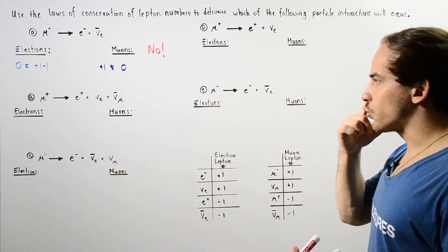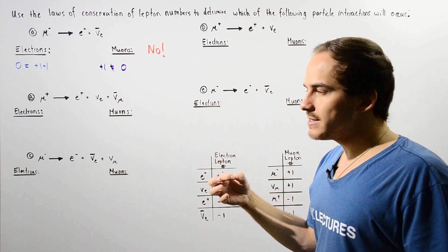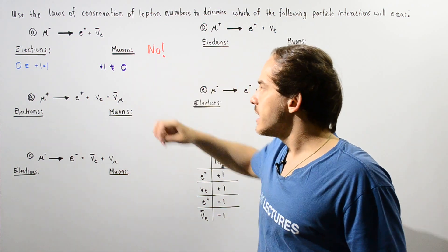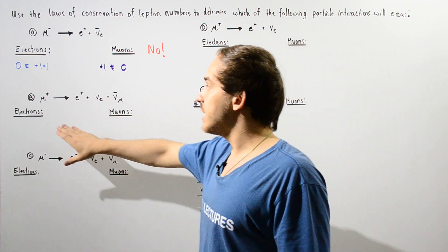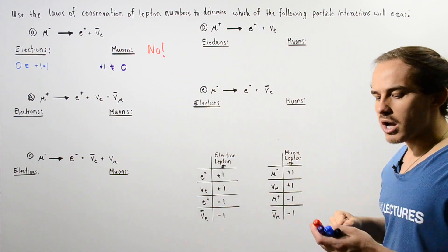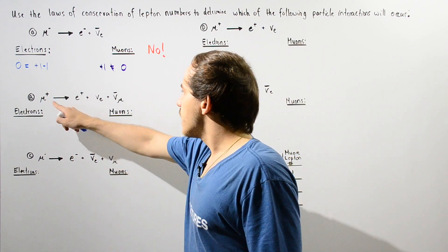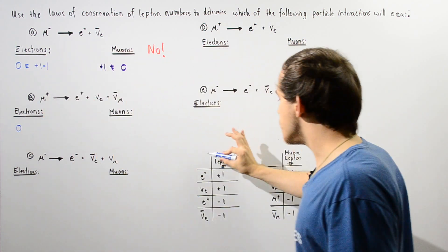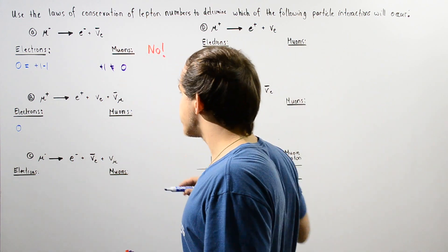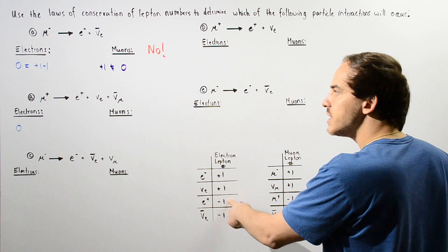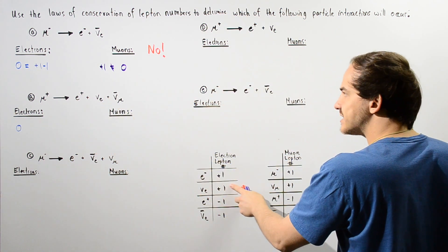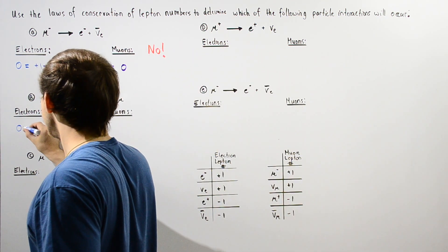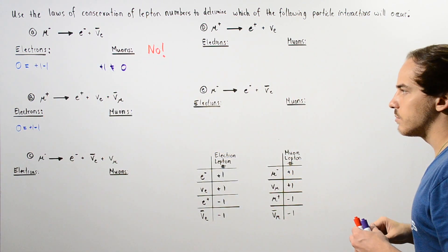Let's move on to reaction B. In reaction B, an anti-muon produces a positron, an electron neutrino, and a muon anti-neutrino. Let's determine whether the electron lepton number is conserved. On the left side, we have zero because we have none of these particles. On the right side, the positron gets negative one, the electron neutrino gets positive one, and the muon anti-neutrino gets zero. Positive one plus negative one equals zero, so the electron lepton number is conserved.